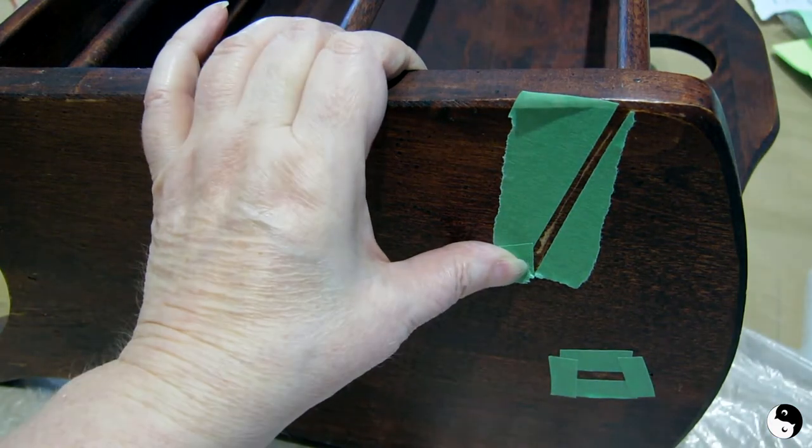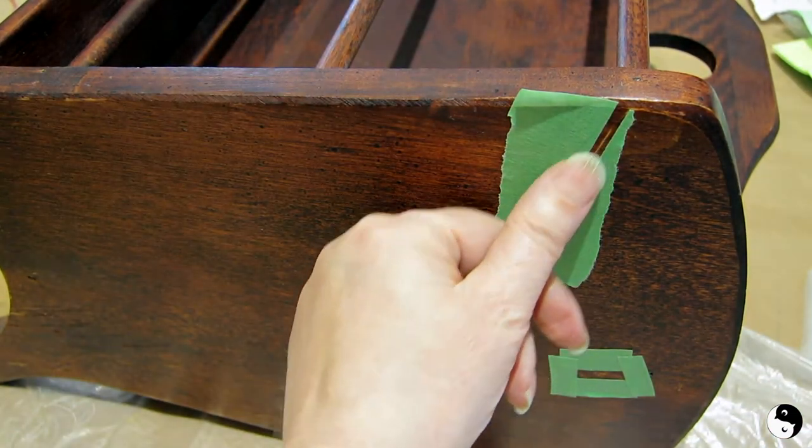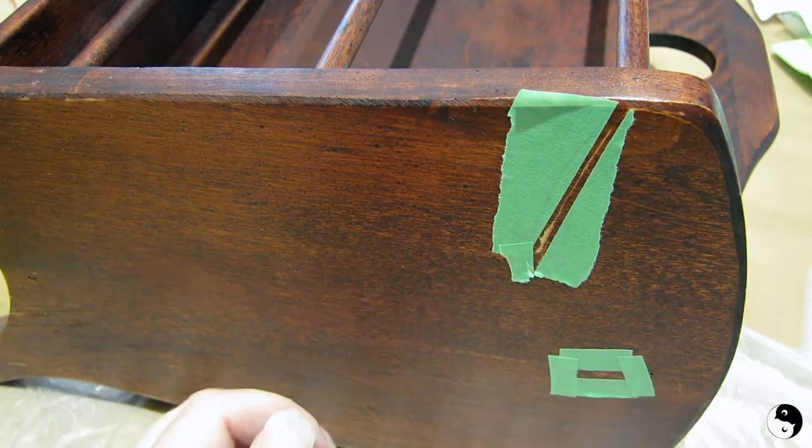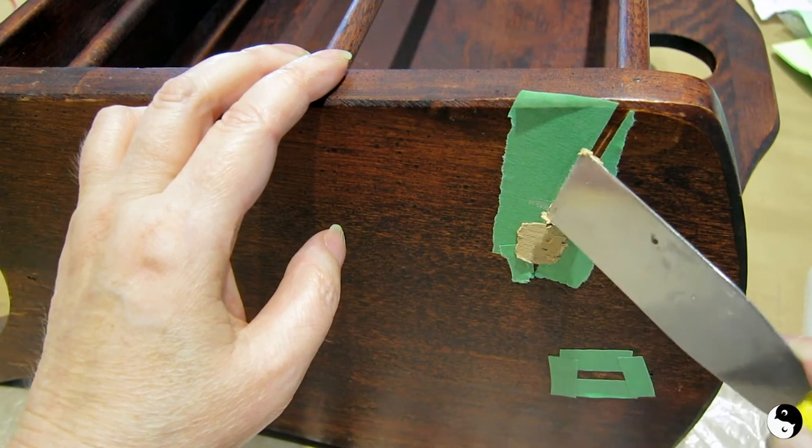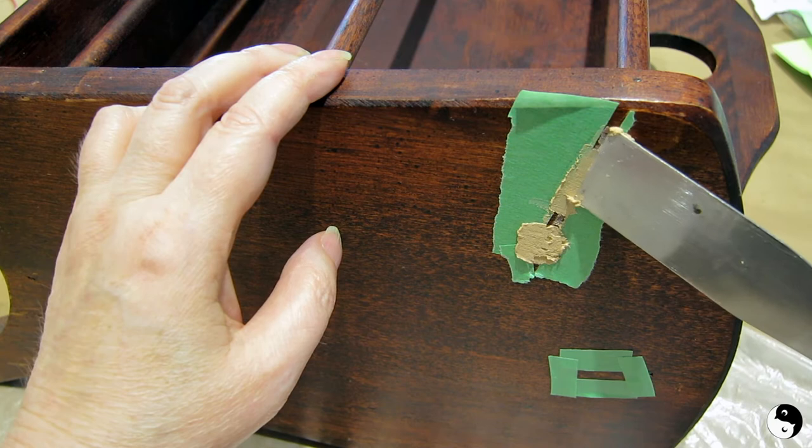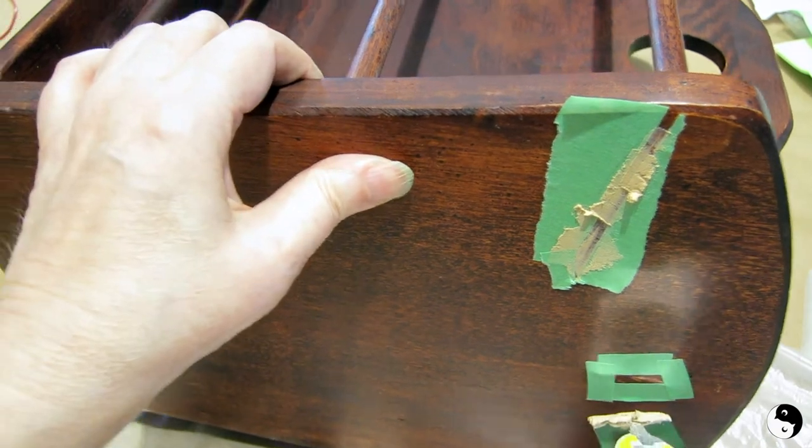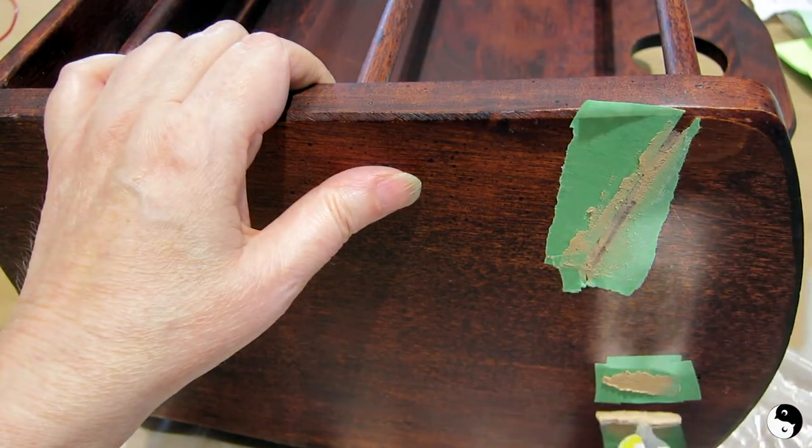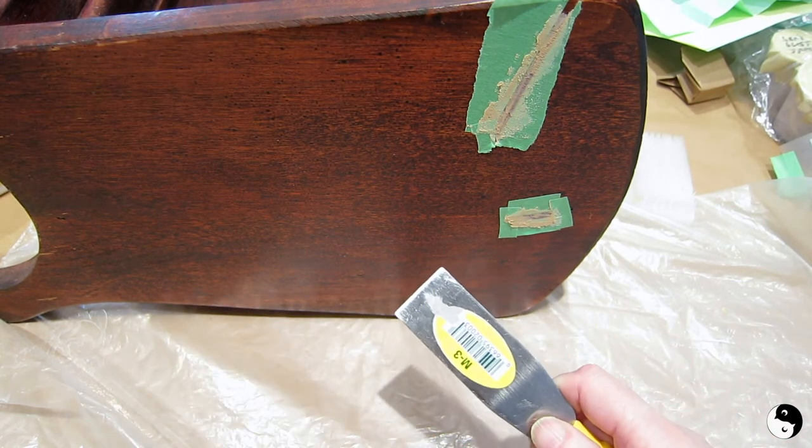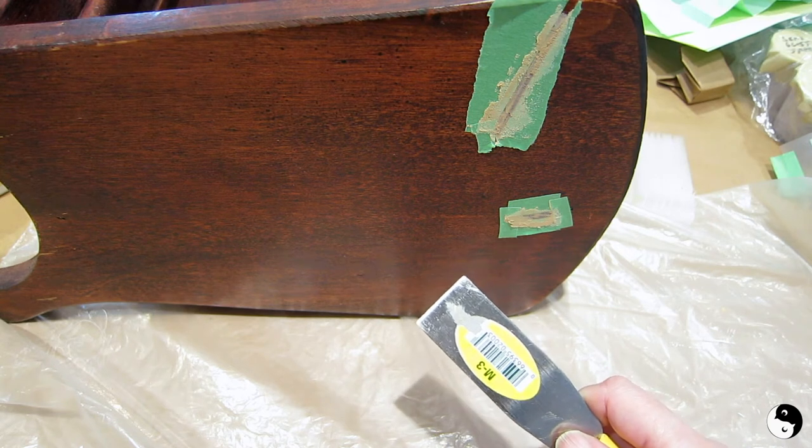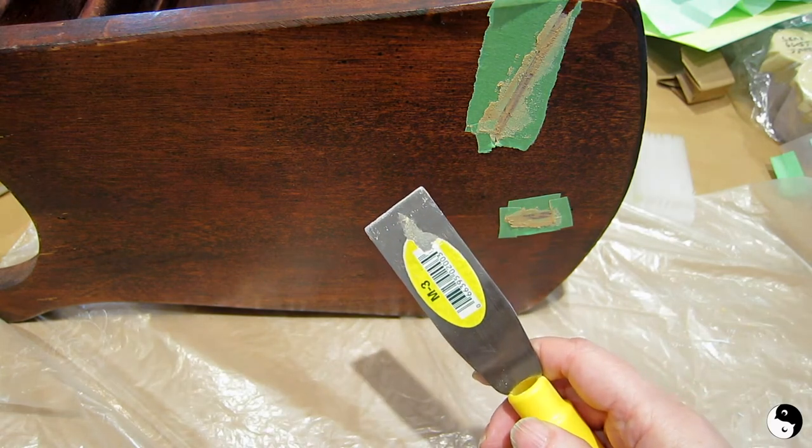If you have any gouges on the piece you're working on, what I usually like to do is tape off around the sides of it so I don't get more wood filler or mud on the wood than I have to. Then I'm just going to take the wood filler and scrape it on where I need it. Never pour it down a drain because it solidifies and can clog it.